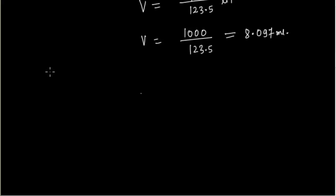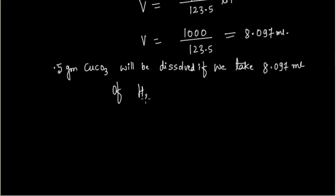Therefore, 0.5 grams of copper carbonate will be dissolved if we take 8.097 milliliters of H2SO4.